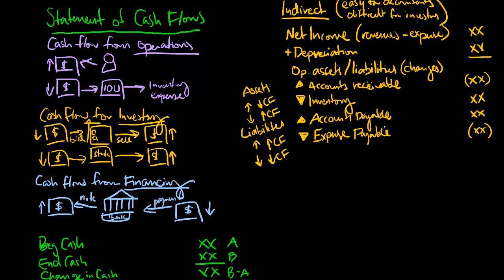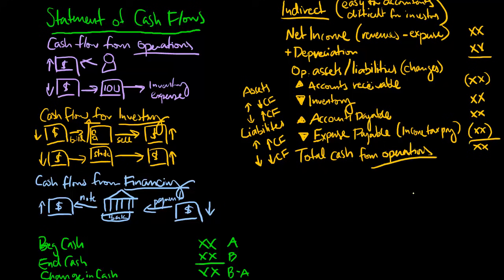You're going to go through all of your operating assets and liabilities to capture those changes. We'll also include things like income taxes payable and any payables associated with our operating assets. So the total — net income plus depreciation, plus any decrease in assets, minus any increase in assets, plus any increase in liabilities, minus any decrease in liabilities — is going to give us our total cash from operations, sometimes called provided by operations.